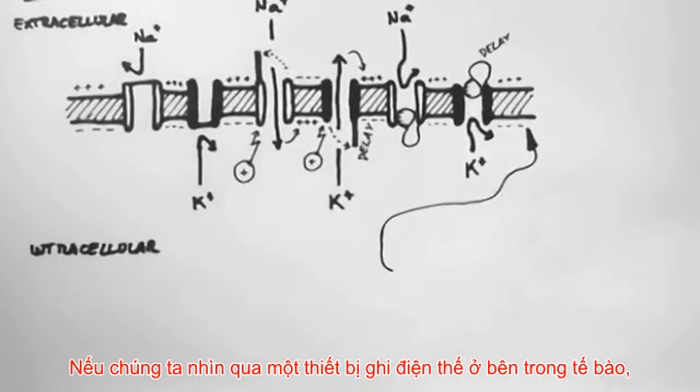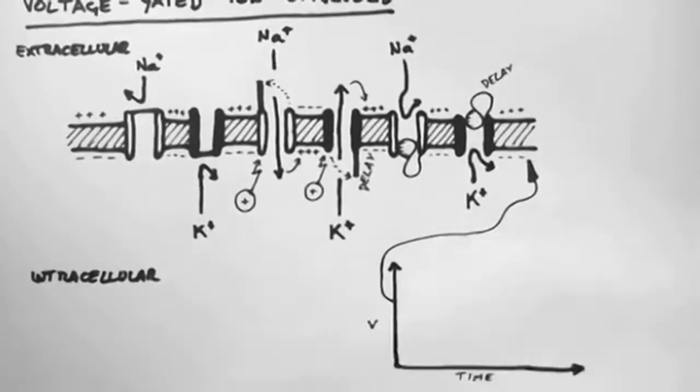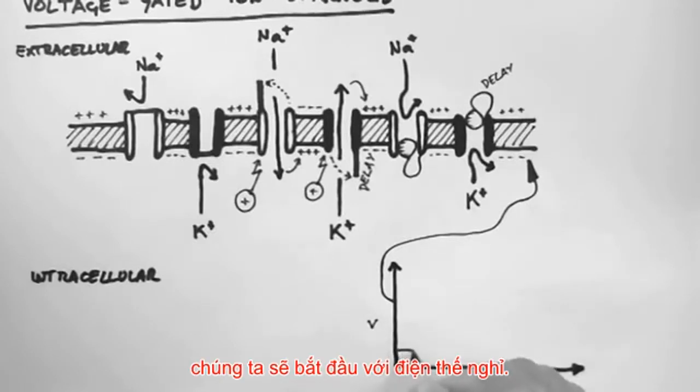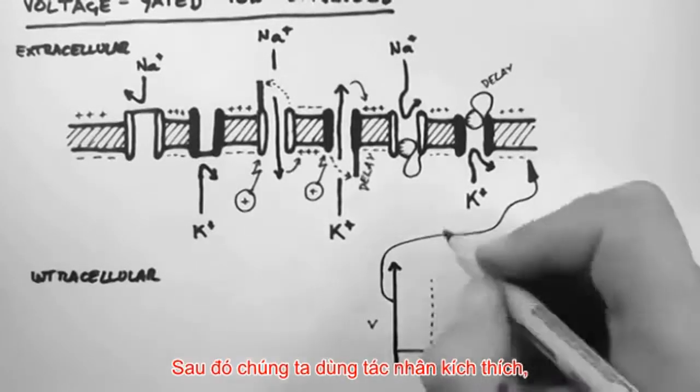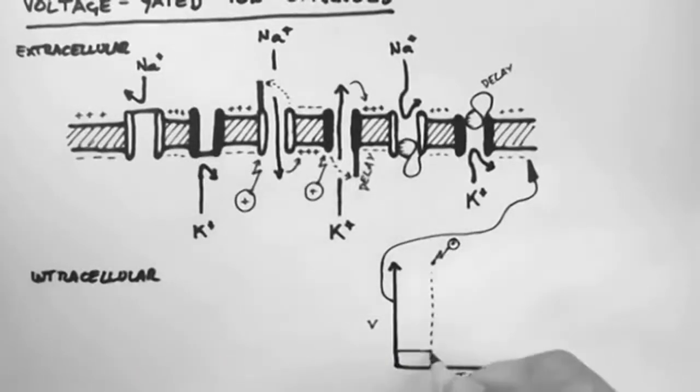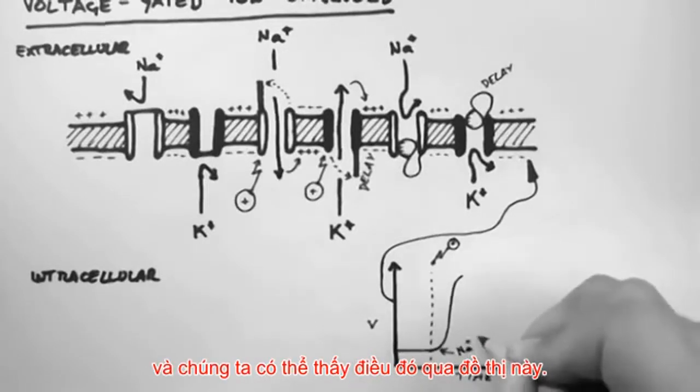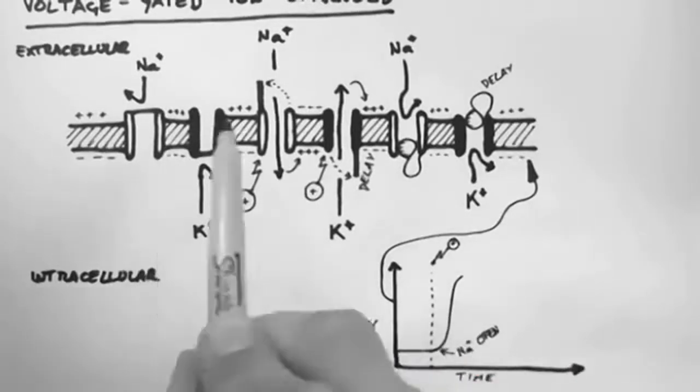taken inside the cell, and we look at voltage versus time, then we start with our resting membrane potential. Then we applied our stimulus, and this opened the voltage-gated sodium channels. The cells become more positive, and we can see that on this graph.